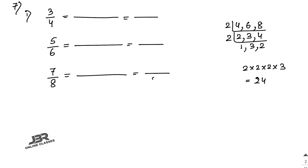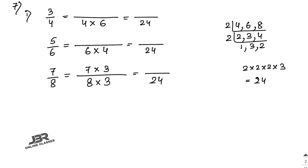Write 24 as the common denominator for each fraction. For 4: multiply by 6 to get 24, so 3 into 6 is 18. For 6: multiply by 4 to get 24, so 5 into 4 is 20. For 8: multiply by 3 to get 24, so 7 into 3 is 21. The answers are 18 by 24, 20 by 24, and 21 by 24.